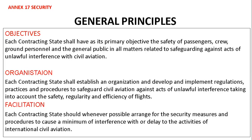General principles: the objective of security is that each contracting state shall have as its primary objective the safety of passengers, crew, ground personnel, and the general public in all matters related to safeguarding against acts of unlawful interference with civil aviation. Each contracting state shall establish an organization and develop and implement regulations, practices, and procedures to safeguard civil aviation.